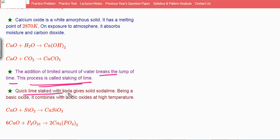Quick lime slaked with soda gives solid soda lime. Being a basic oxide, it will combine with acidic oxides even at high temperature. If you add calcium oxide, it reacts with silicon dioxide and gets converted to calcium silicate.